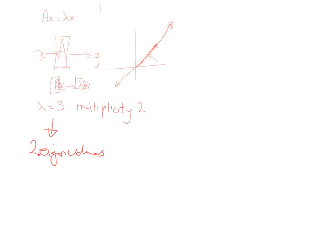So if we've got multiplicity 2, we're going to have 2 eigenvectors. These 2 eigenvectors will be, by their nature, linearly independent, and they're basically going to describe a 2-dimensional space.